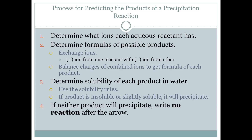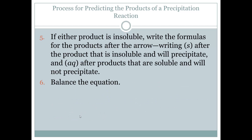When we write out precipitation reactions, the first thing we want to do is determine what ions are in each aqueous reactant. Then determine the formulas of possible products — you do this by exchanging the ions, the positive and the negative switch places. Balance the charges and combine the ions to get the formula of each product. Then determine the solubility of each product in water using the solubility rules — which one will form a solid and which one won't. If neither product forms a solid, we write 'no reaction' after the arrow. If either product is insoluble, write the formulas of the products after the arrow, writing (s) after the product that is insoluble and will precipitate, and (aq) after products that are soluble. Then balance the equation.